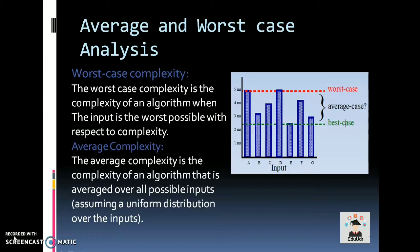Worst case complexity is the complexity of an algorithm when the input is the worst possible with respect to the complexity. For example, if we have to find an element from an array and it does not belong to the array, then it will become the worst case complexity of that algorithm.